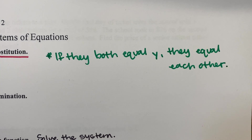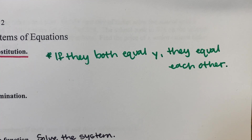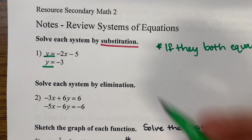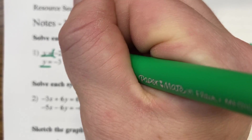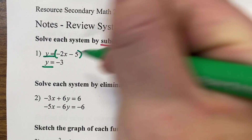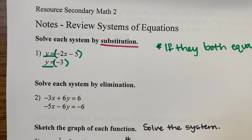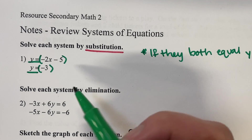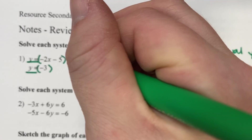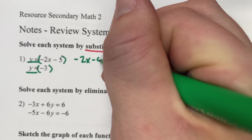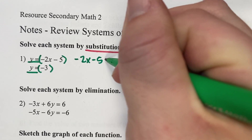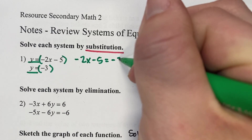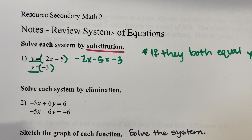In other words, if they both say y equals and y equals, we can just take the other sides — negative 2x minus 5 and negative 3 — and set them equal to each other and solve. So we have negative 2x minus 5 equal to negative 3, and now we can go ahead and solve for x.